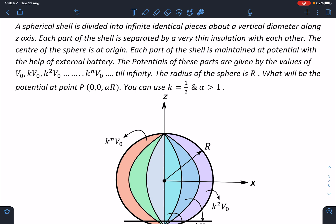Each part of the shell is maintained at potential with the help of an external battery. The potentials of these parts are given by the values of V₀, kV₀, k²V₀, and k to the power n V₀ till infinity. The radius of the sphere is R. What will be the potential at point (0, 0, αR)? You can use k equal to 1/2 and α is greater than 1.